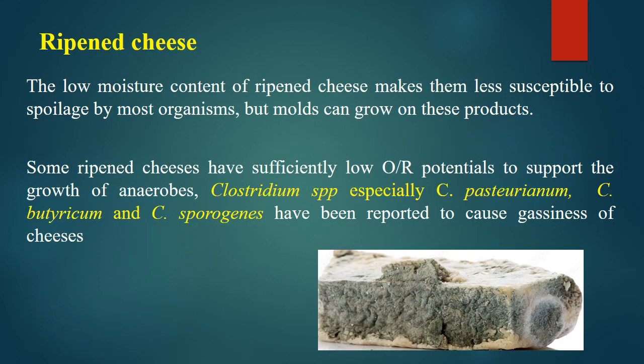Now we will discuss the spoilage of ripened cheese. The low moisture content of ripened cheese makes it less susceptible to spoilage by most organisms, and many bacteria cannot grow. However, some molds can grow. Further, some ripened cheeses have sufficiently low oxidation-reduction potential, meaning near-anaerobic conditions, so anaerobic bacteria can grow and cause spoilage, especially of the Clostridium group. Species such as Clostridium pasteurianum, Clostridium butyricum, and Clostridium sporogenes have been reported to cause gassiness of ripened cheese.